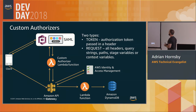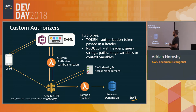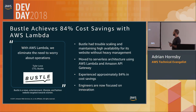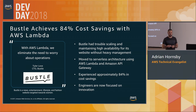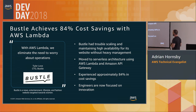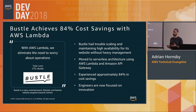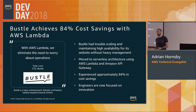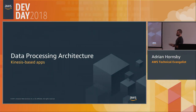Cognito supports OpenID and SAML. If you want a custom authorizer, you can create a Lambda function in API Gateway to handle custom authorizations. That also means if your authentication is on-prem or outside the cloud, you can use Lambda for custom authorizations on API Gateway, letting you slowly move parts of your infrastructure to the cloud. Bustle actually moved all their infrastructure into this fully serverless architecture and achieved 84% cost saving. Serverless is great — I love it — but it's not a hammer. You need the right use case.